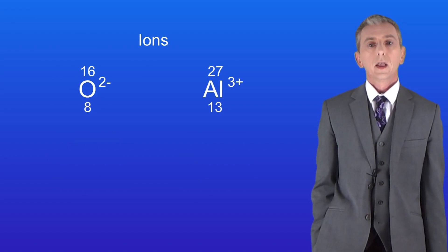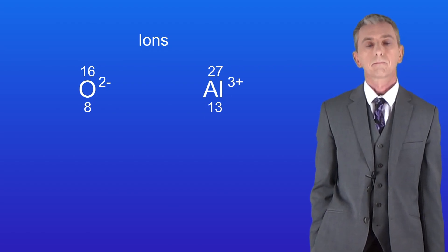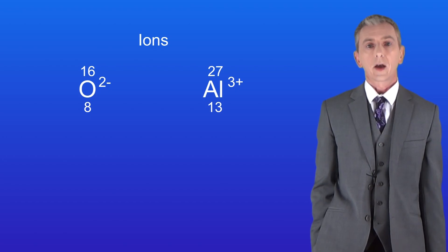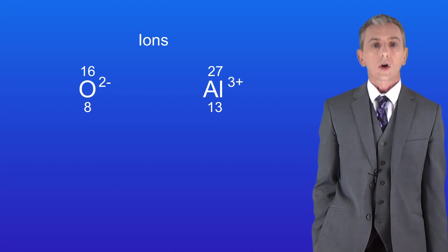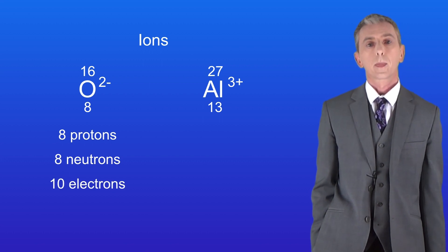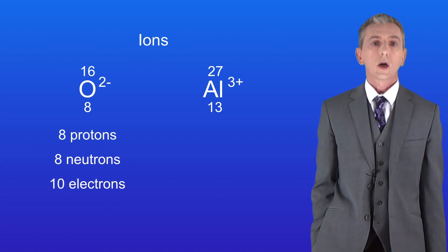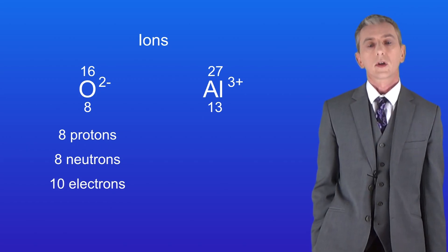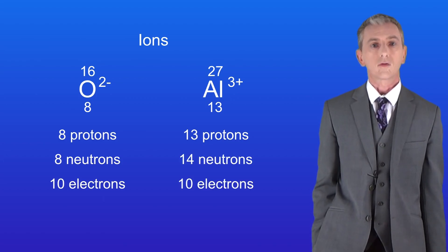Here are two for you to try. You should pause the video now and work out the numbers of protons, neutrons and electrons for these two ions. The oxide ion on the left has an overall two negative charge, which means that the oxygen atom must have gained 2 electrons. So it's got 8 protons, 8 neutrons and 10 electrons. The aluminium ion on the right has a 3 positive charge so it must have lost 3 electrons. So this ion has 13 protons, 14 neutrons and 10 electrons.